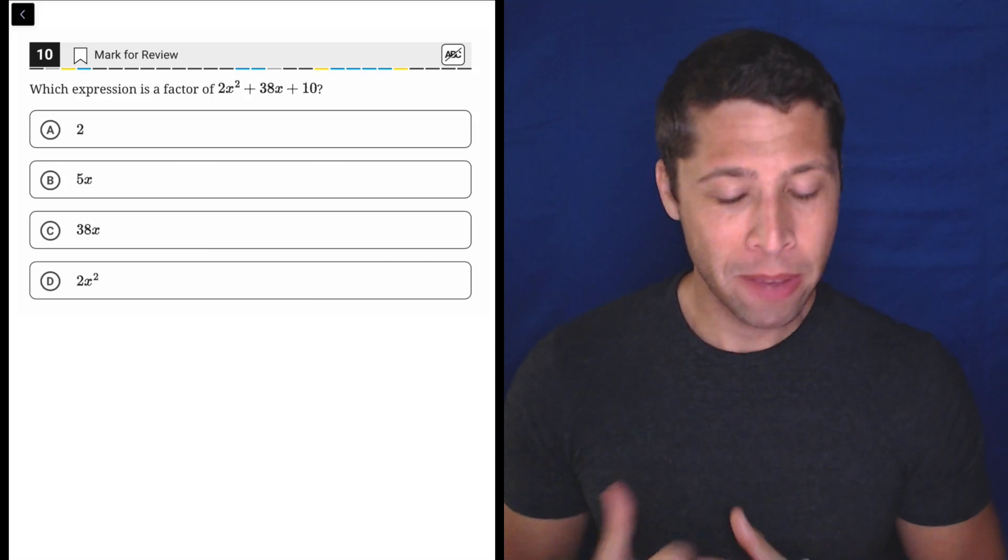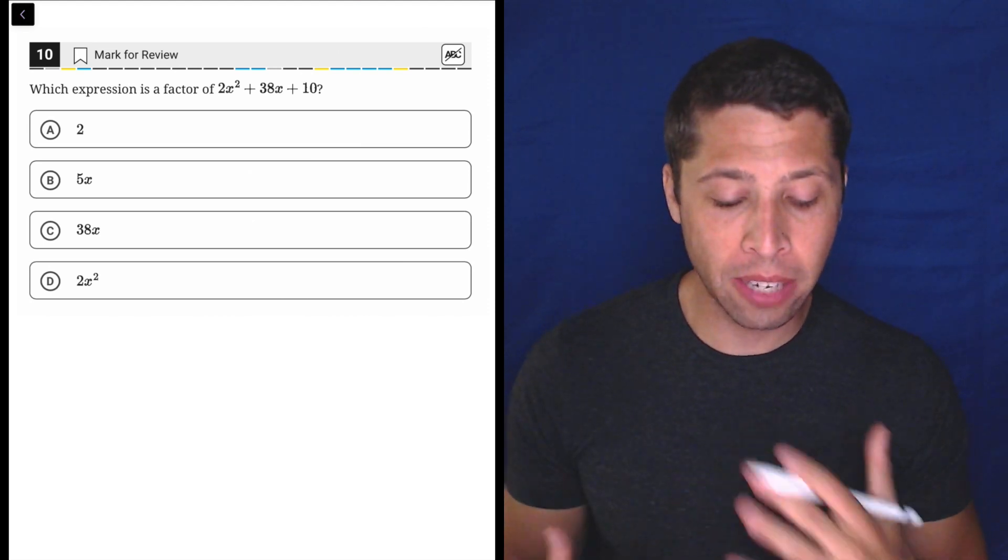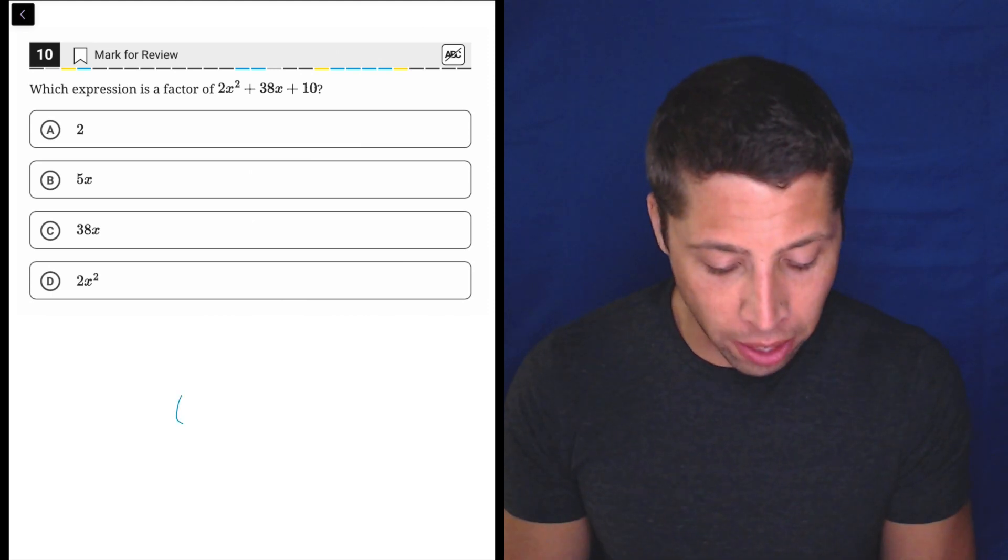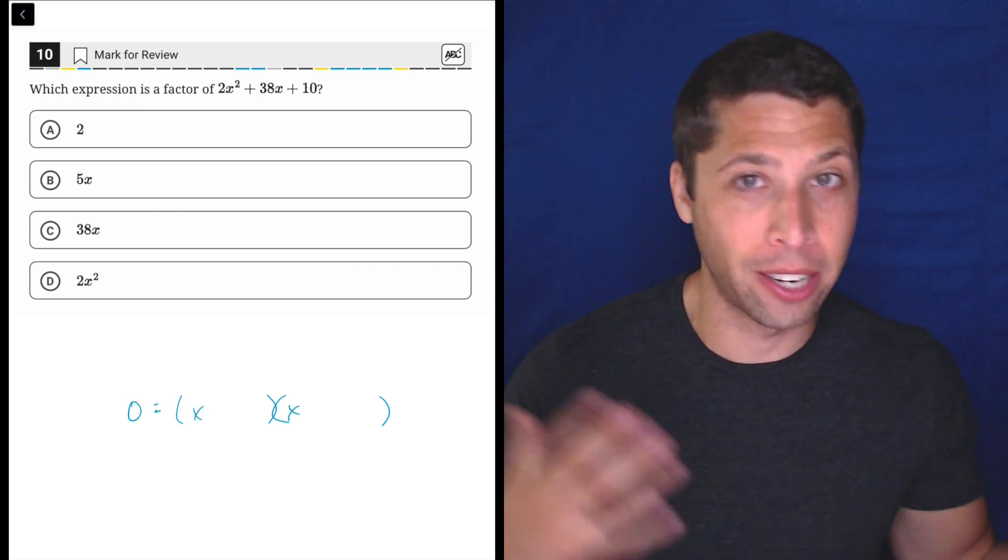This question may seem intimidating because when we think of the word factor and we think of a quadratic, which is what they're giving us, we normally think we've got to do that thing where we get like two parentheses, right, equal to zero, x plus or minus, whatever.